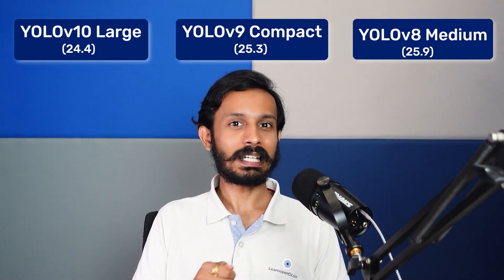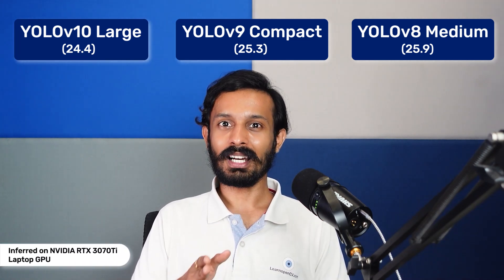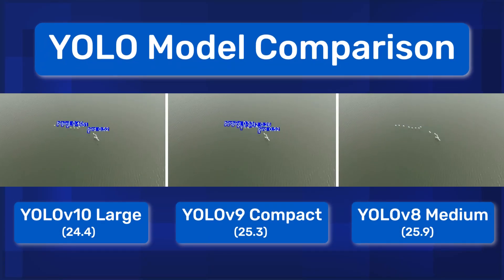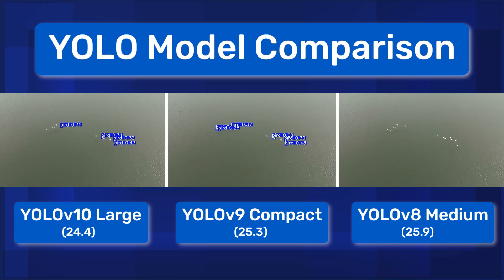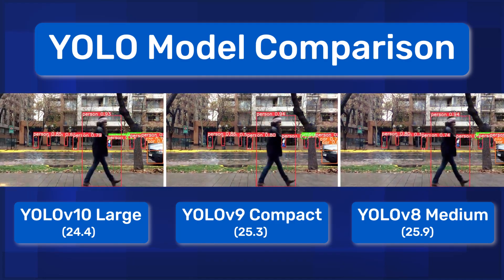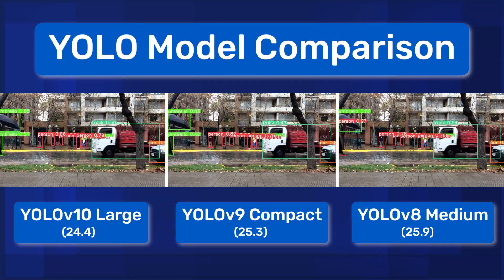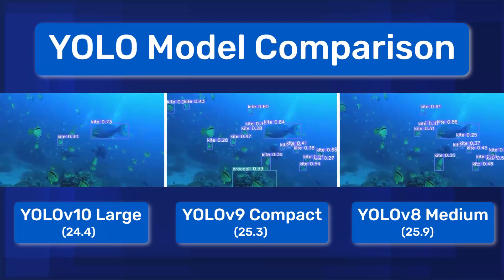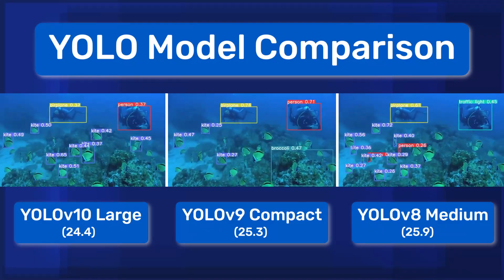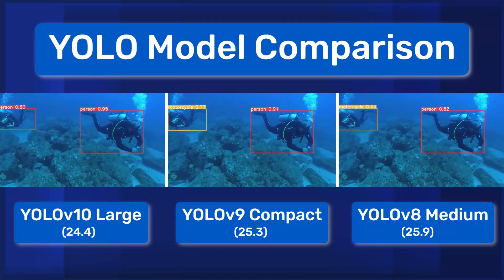Next, we compared a few YOLO models with similar numbers of parameters. We ran inference using the YOLO V10 large model, YOLO V9 compact model, and YOLO V8 medium model on an NVIDIA RTX 3070 Ti laptop GPU. When detecting small objects, YOLO V10 gives wrong labels at times while YOLO V8 simply fails. For normal street scenes, all three models perform well and consistently. But in an underwater video, all models fail — likely because the training set does not contain underwater samples.